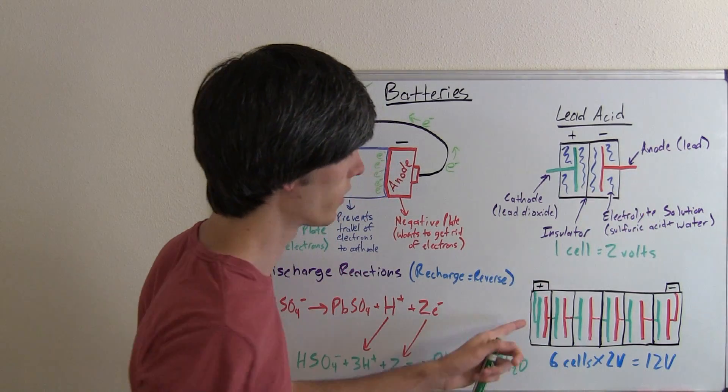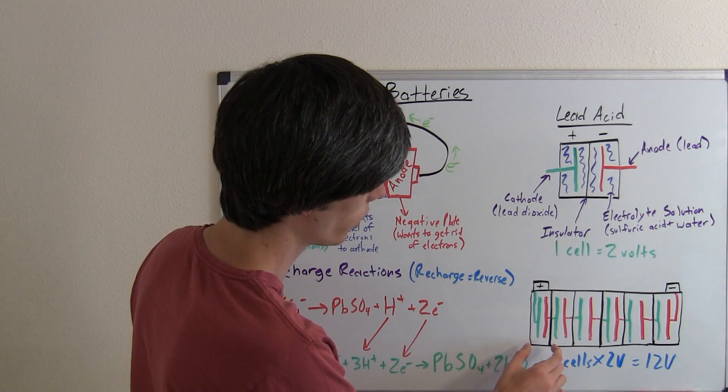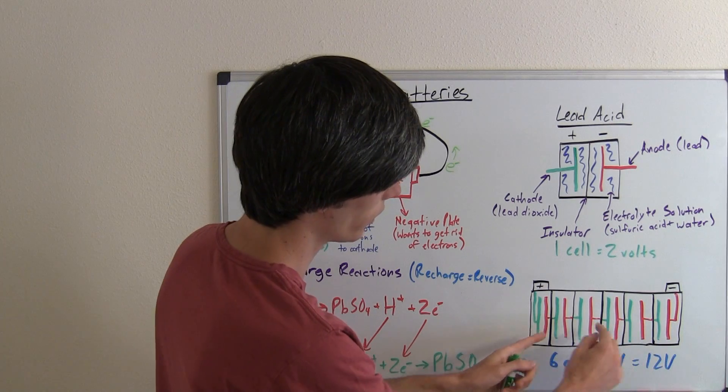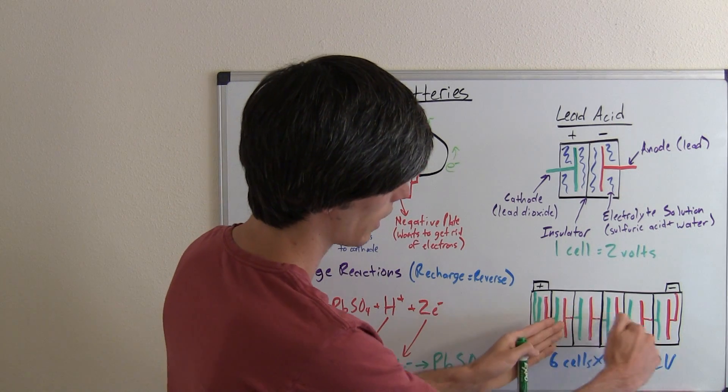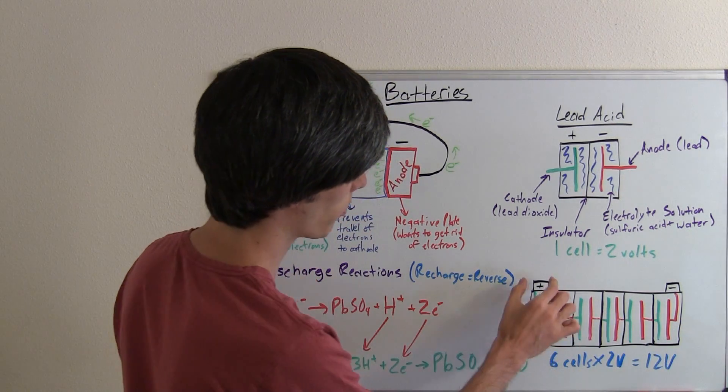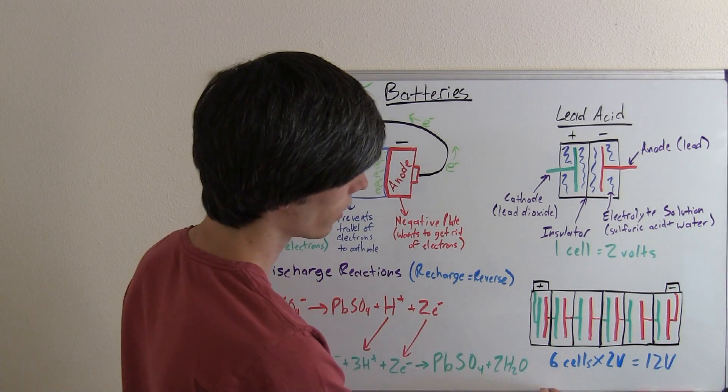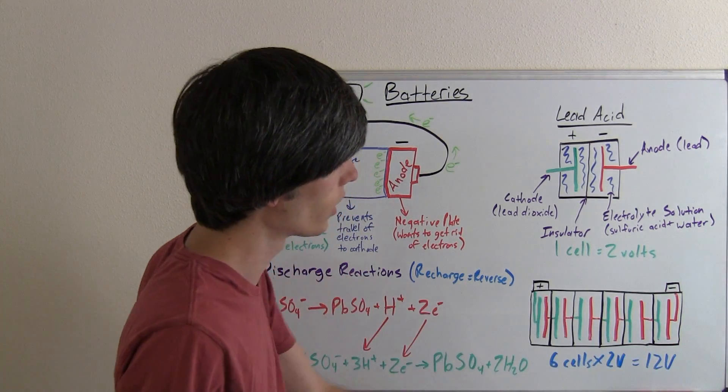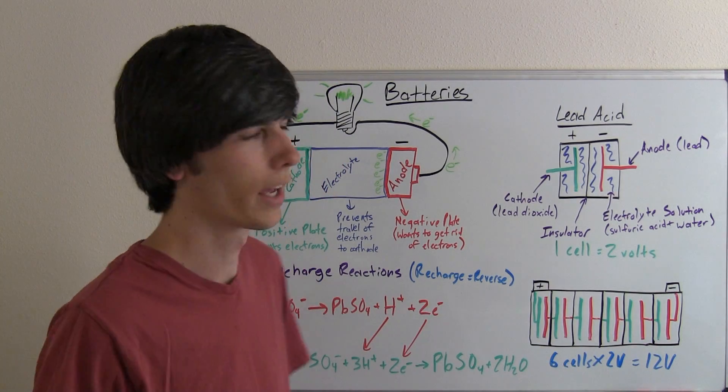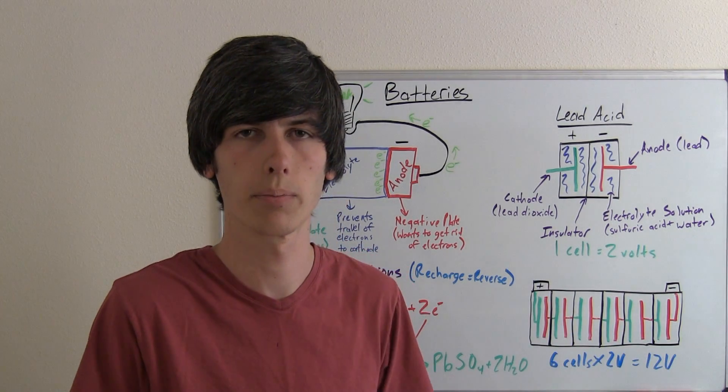All you do is you stack different multiple cells together. So you've got six cells here, and you can see the anode cathode, and they just line up in a row. You've got your positive terminal and your negative terminal, and these six cells, multiplied by two volts each, will give you a total of 12 volts, and that's how your car has its 12 volt battery.